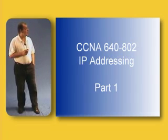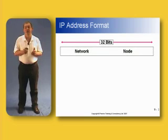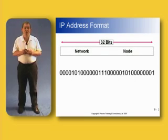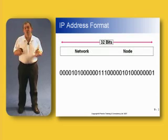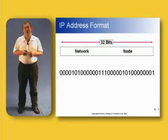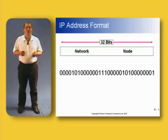An IP address is a 32-bit number — 32 bits long. As you can see, it's just a series of zeros and ones, and a computer, PC, or router would have absolutely no problem reading that IP address. Our problem as human beings is that we don't work in binary, and therefore we can't talk about that binary number with any ease.